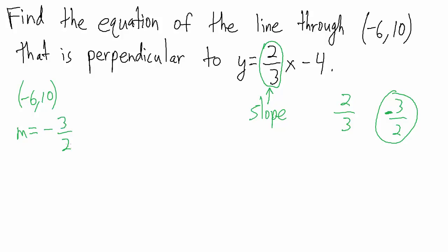Another way to think about slopes of perpendicular lines: if you multiply their slopes together you get negative one. Notice that two-thirds times negative three-halves is indeed negative one, so that's a quick way of verifying the relationship.